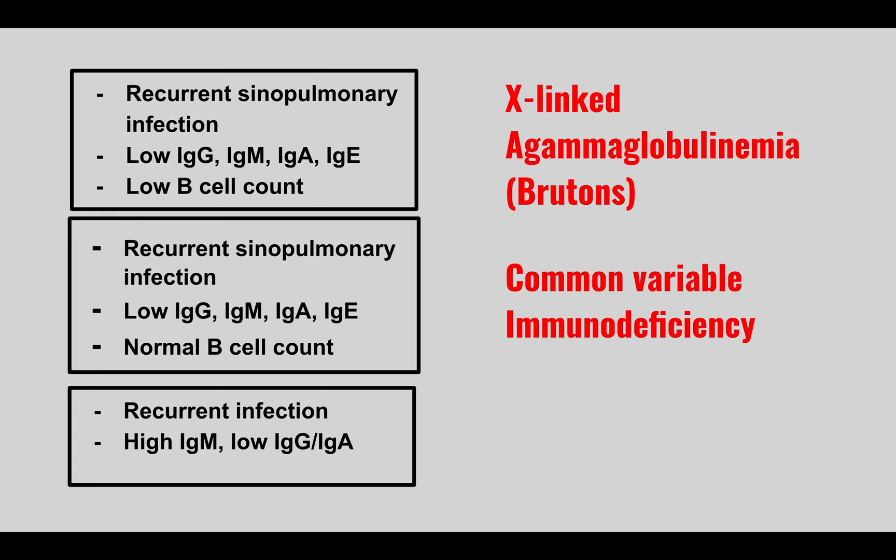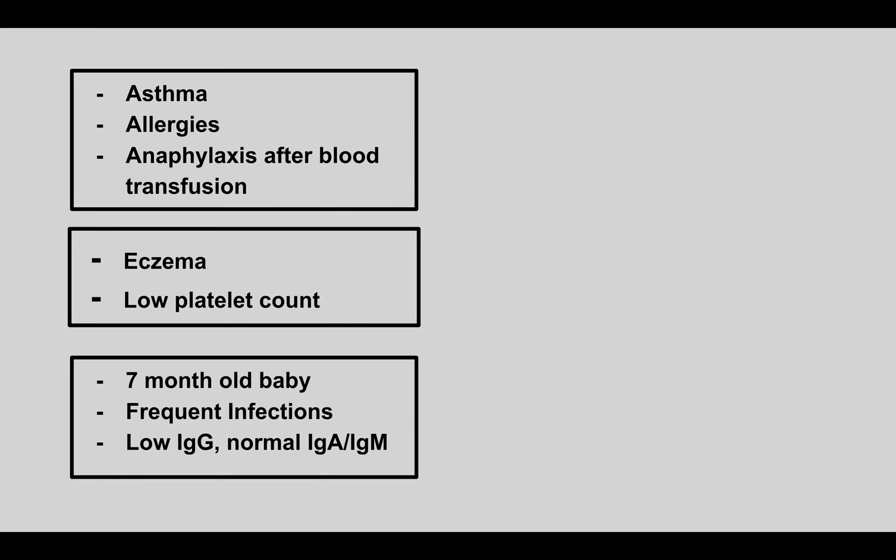Recurrent infections with a high IgM but low IgG and IgA is hyper-IgM syndrome. Someone who presents with asthma, allergies, and anaphylaxis after a blood transfusion has selective IgA deficiency. These patients develop anaphylaxis after transfusion because they have never been exposed to IgA, which is present in many blood products.